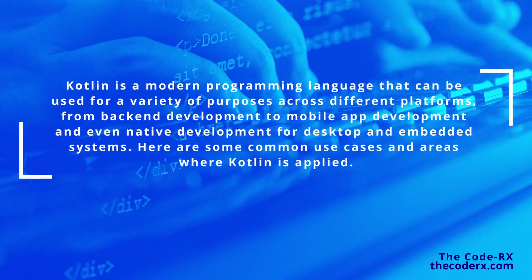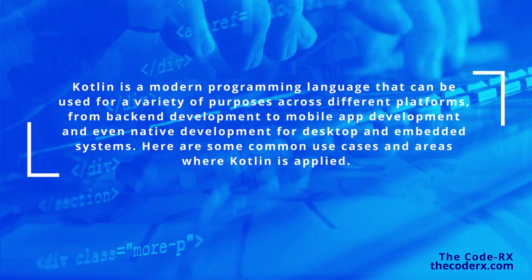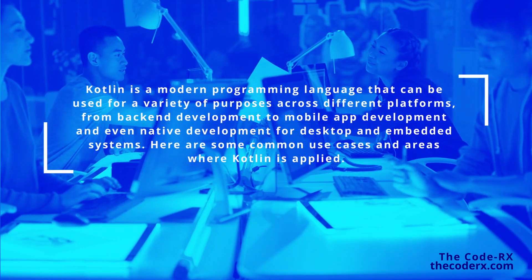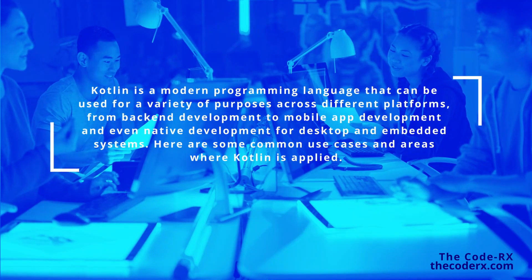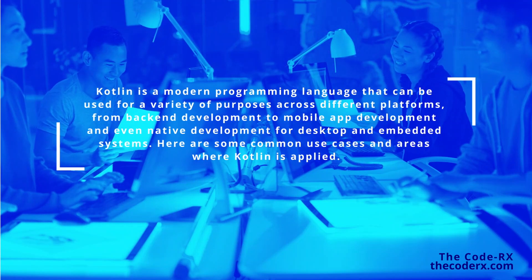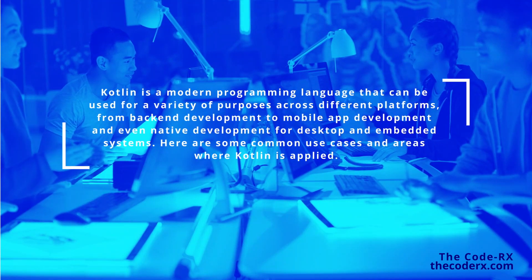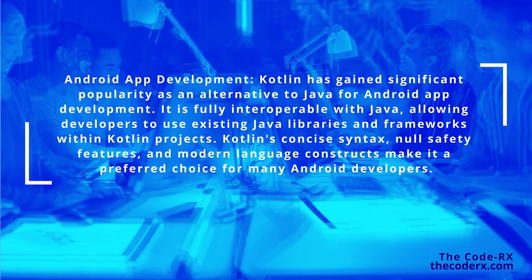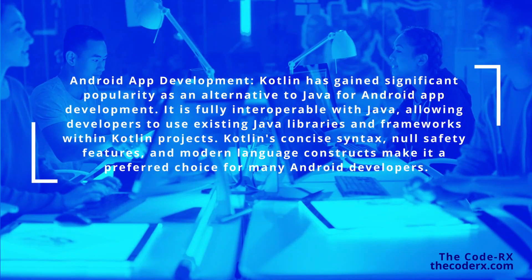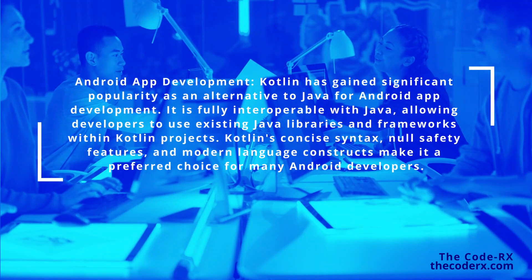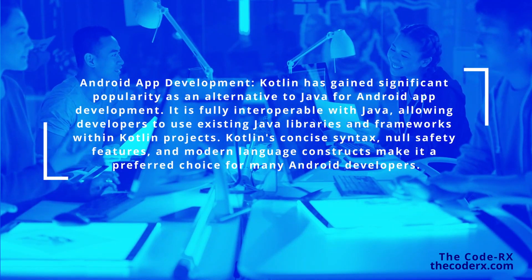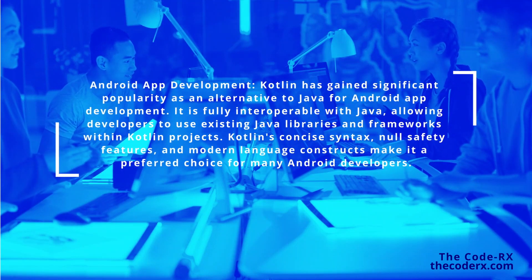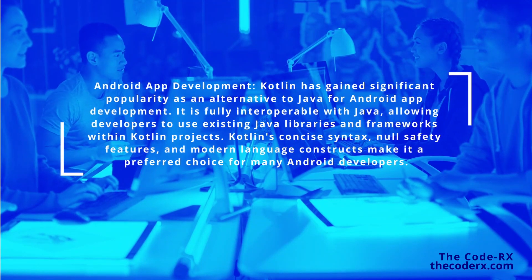Now let's explore some of the uses for Kotlin. Kotlin is a modern programming language that can be used for a variety of purposes across different platforms, from back-end development to mobile app development, and even native development for desktop and embedded systems. First, Android app development: Kotlin has gained significant popularity as an alternative to Java for Android app development. It is fully interoperable with Java, allowing developers to use existing Java libraries and frameworks within Kotlin projects. Kotlin's concise syntax, null safety features, and modern language constructs make it a preferred choice for many Android developers.